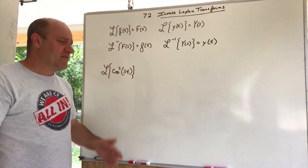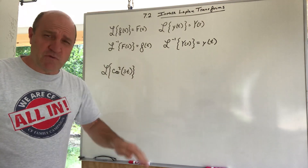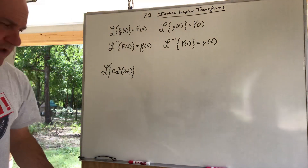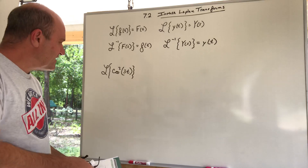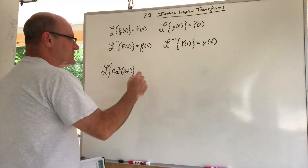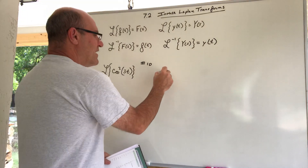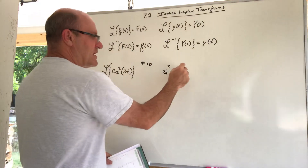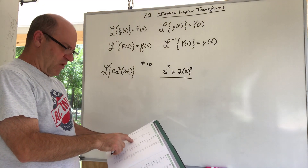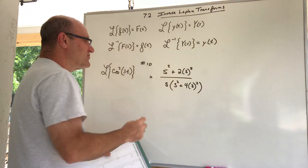Here's an example: the Laplace transform of cos²(3t). That's not a famous one I have memorized, so I look it up — it's number 10 in the table. The rule for cos²(kt) gives: (s² + 2k²) all over s times (s² + 4k²). With k = 3, that means 2k² is 18 and 4k² is 36.